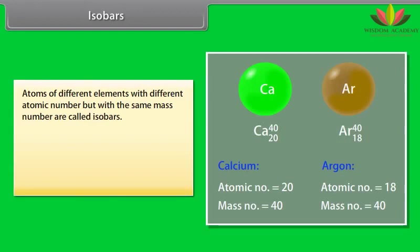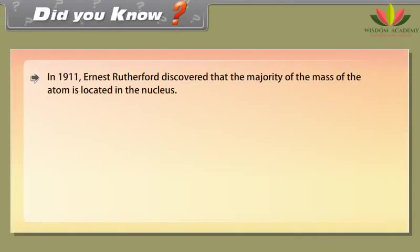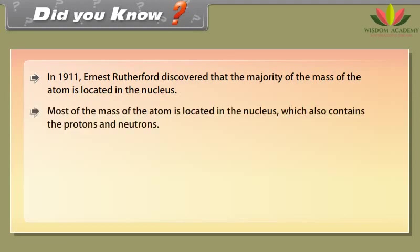Isobars. Atoms of different elements with different atomic number, but with the same mass number, are called isobars. For example, calcium and argon have different number of electrons and have different atomic numbers, but they have same mass number as 40 and so they are said to be isobars.